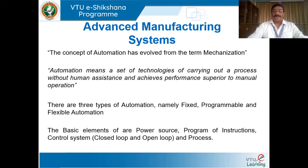So far we have finished machine tools successfully, and in the previous class we had discussed about different milling operations like gang milling, straddle milling, and form milling. Once we finished all these milling operations, we started with automation and discussed what exactly advanced manufacturing systems are.